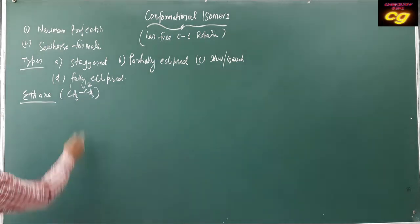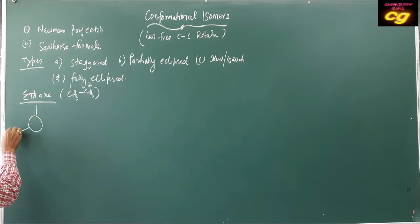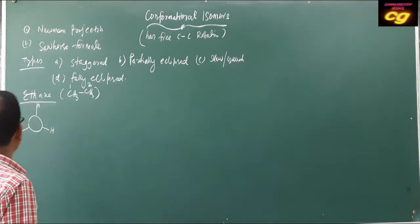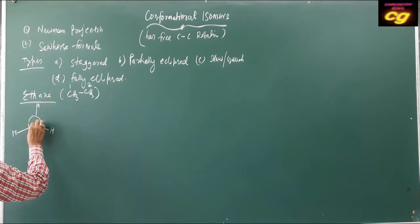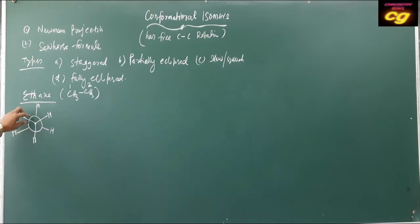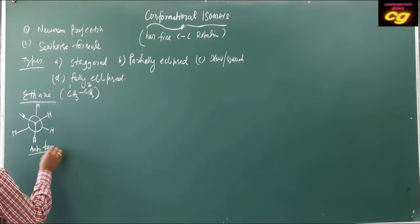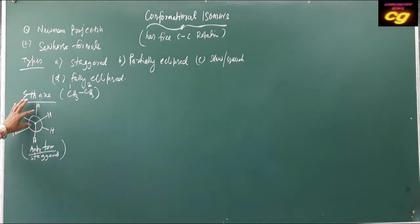The back carbon is represented as a circle having three hydrogens, each 120 degrees apart. The front carbon also has three hydrogens, each 120 degrees apart. Here you see the back carbon C-H bond and front carbon C-H bond are in opposite positions — that is anti. This is called the anti form, or it is also called the staggered form.